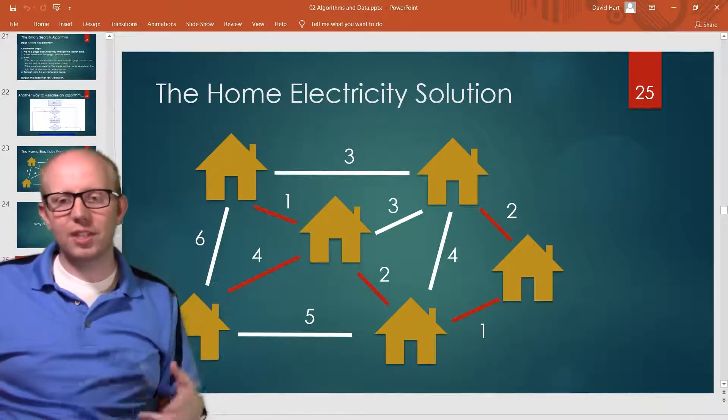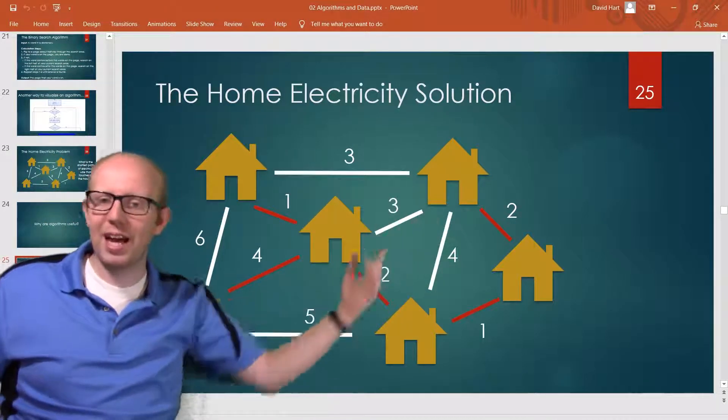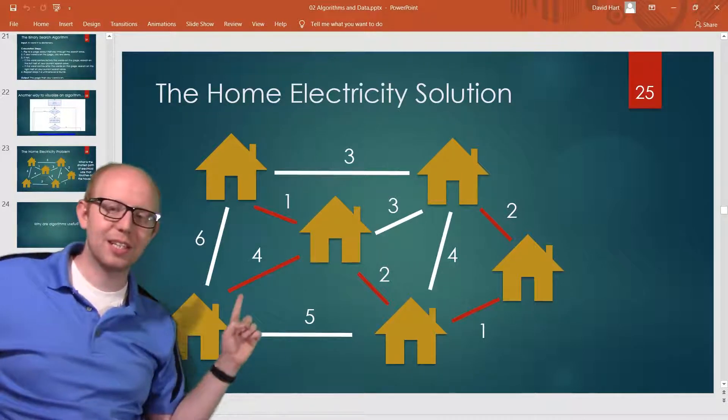And then we say, well what's the next shortest possible wire we could add? We can add that four but that house is already connected, so we can add this four because we are still missing this house and then you have your full solution.